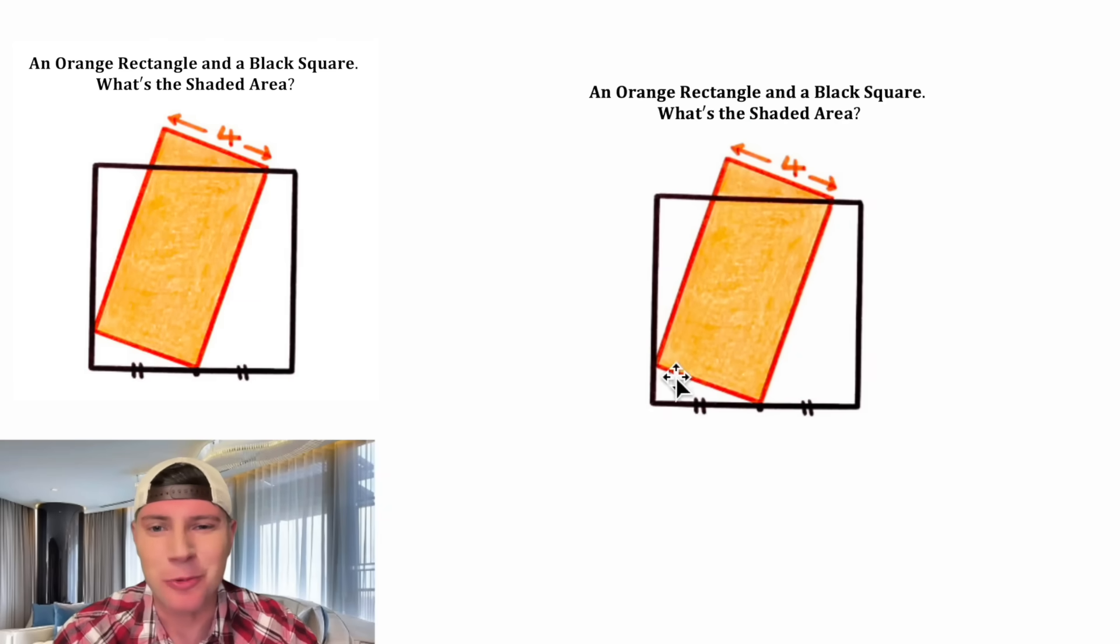This video is sponsored by Brilliant. Hey guys, this looks like a fun one. We're given an orange rectangle and a black square and want to know what is the shaded area. We're also given that this intersection point bisects the base of the square.